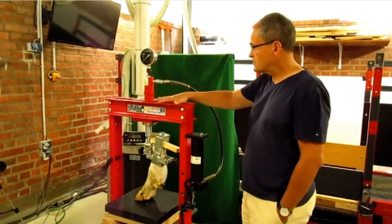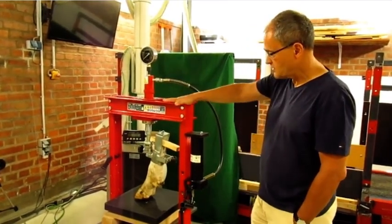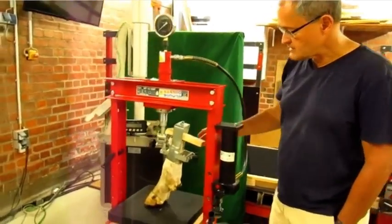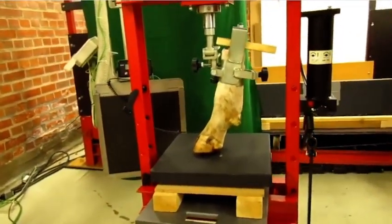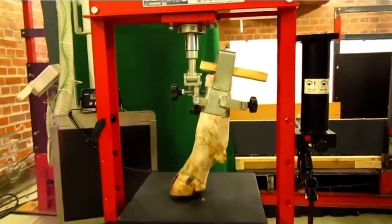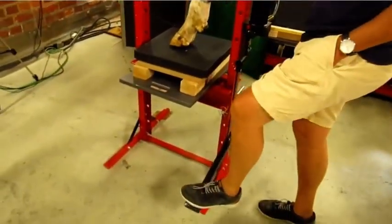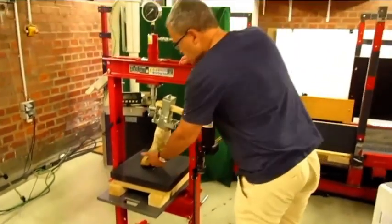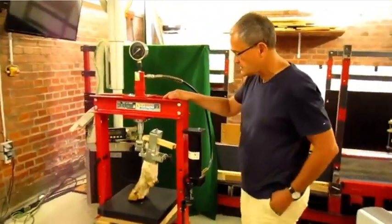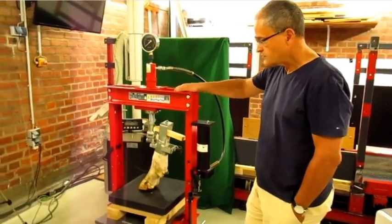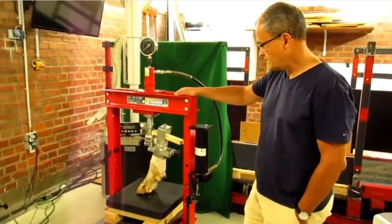We will do pressure measurements using a hydraulic press similar to the one you can see here next to me. We will load cadaver feet with different weights on different grounds, before and after trimming. When loaded, we will be able to measure with pressure sensors underneath the hoof the pressure distribution and the values of pressure on different floors, again before and after trimming.